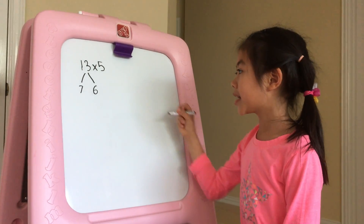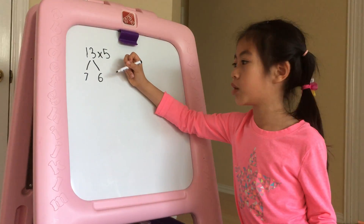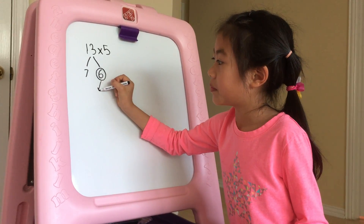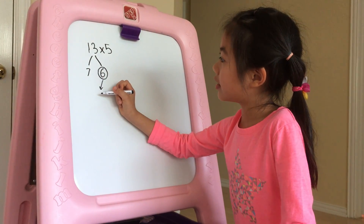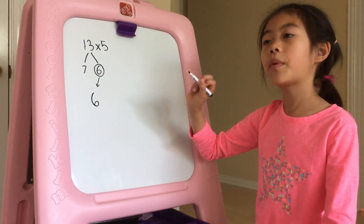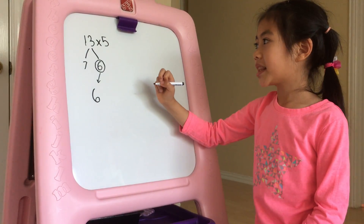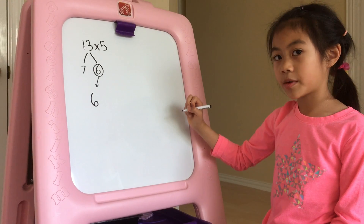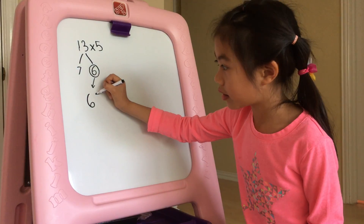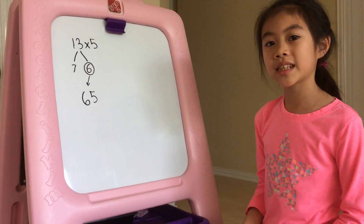So, you take the smaller number — or if it's even, then you take any one of the numbers — which in this case is 6, and then you place it right here, because that's going to be part of your answer. Look at the number 13 again: 13 is an odd number, right? So, if it's an odd number, then you put a 5 there next to the 6. So, the answer is 65.